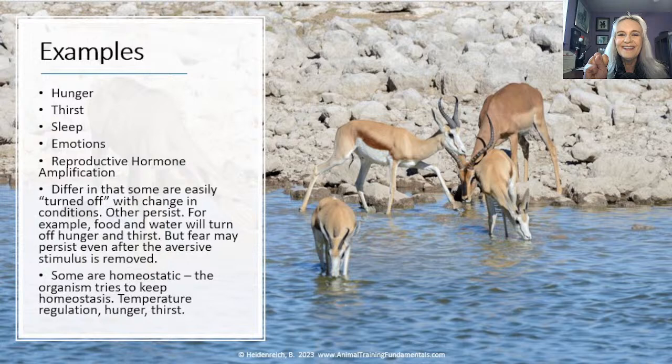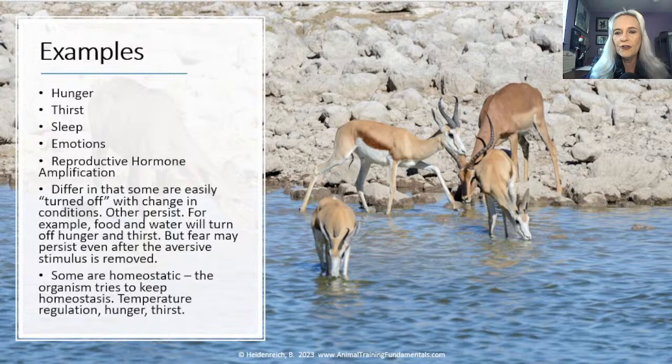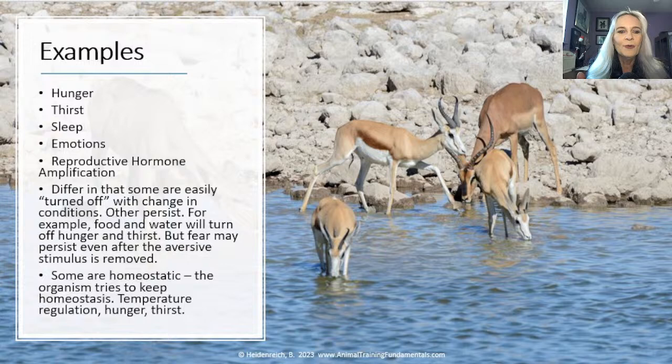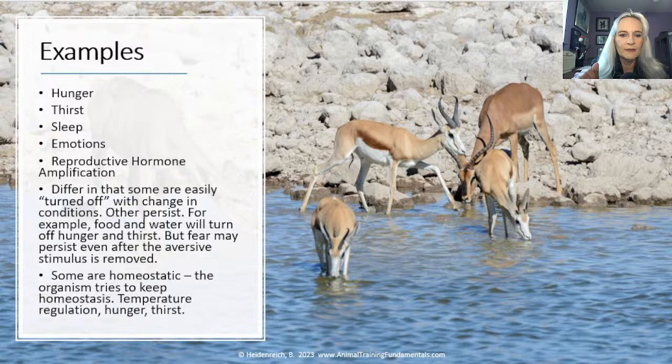Some of these states are easily turned off with a change in conditions. That idea that homeostasis is important - for example, with hunger and thirst, if you eat something, you're done. But others will persist, like a fear response or an aggressive response. Food and water will turn off, but fear may persist even after the aversive stimulus is removed. Some are homeostatic - food and water are resolved by eating and drinking.